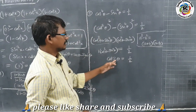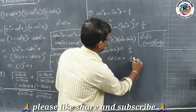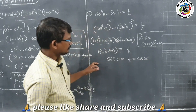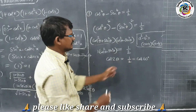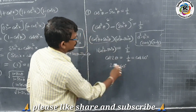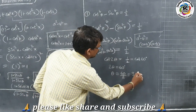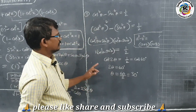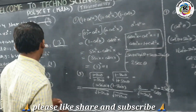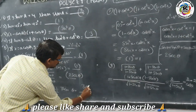Since 2θ = 60°, dividing both sides by 2 gives θ = 30 degrees. The correct answer is θ = 30 degrees.